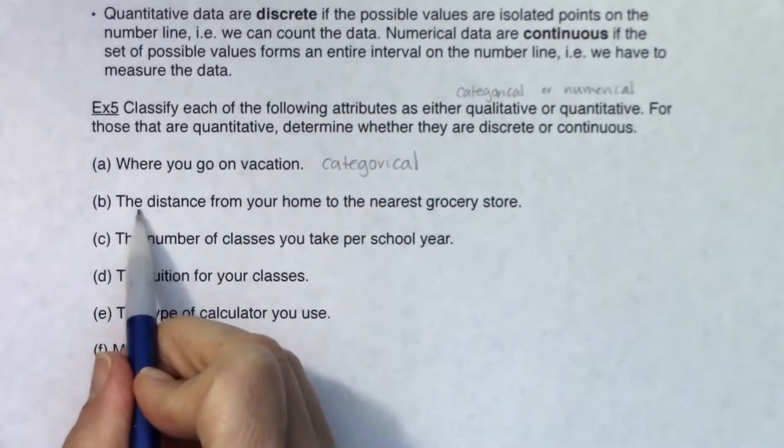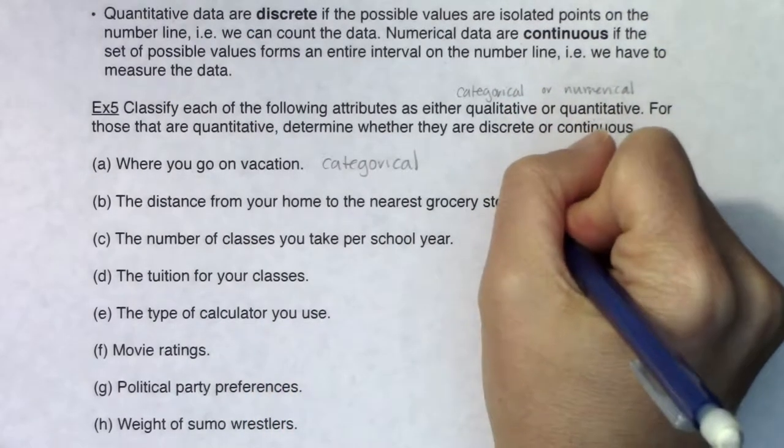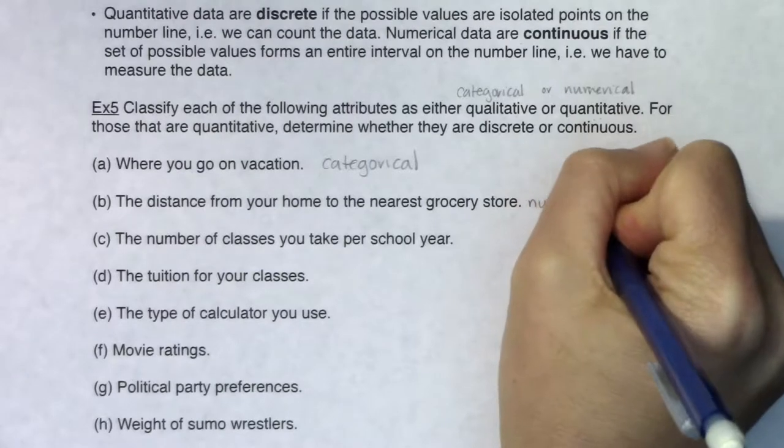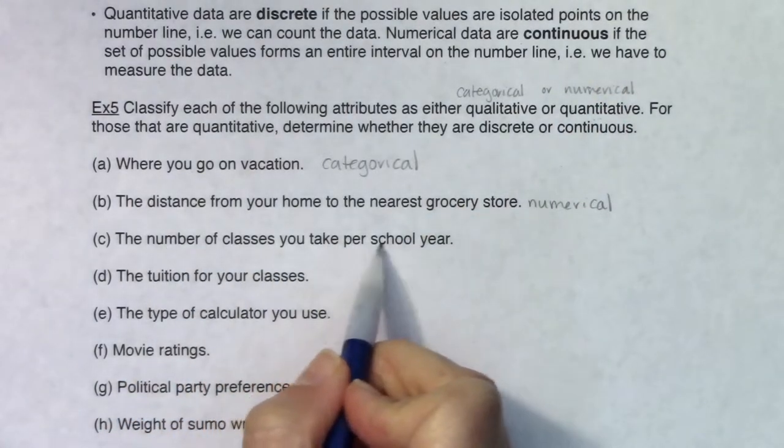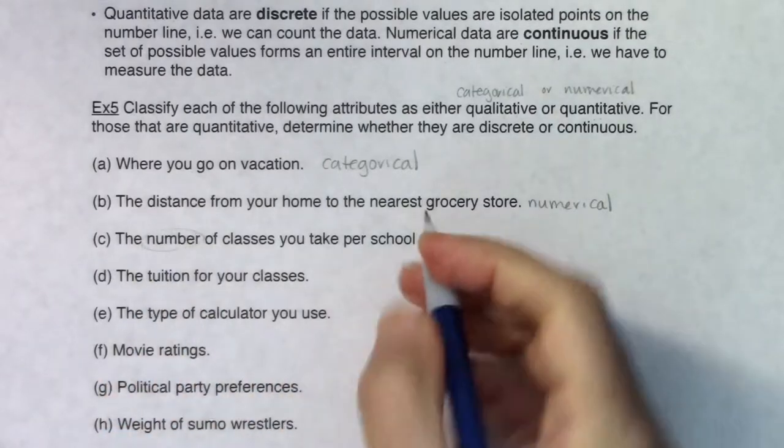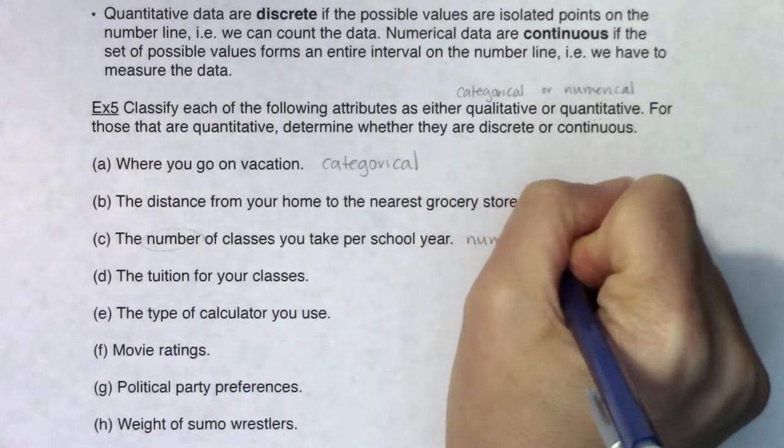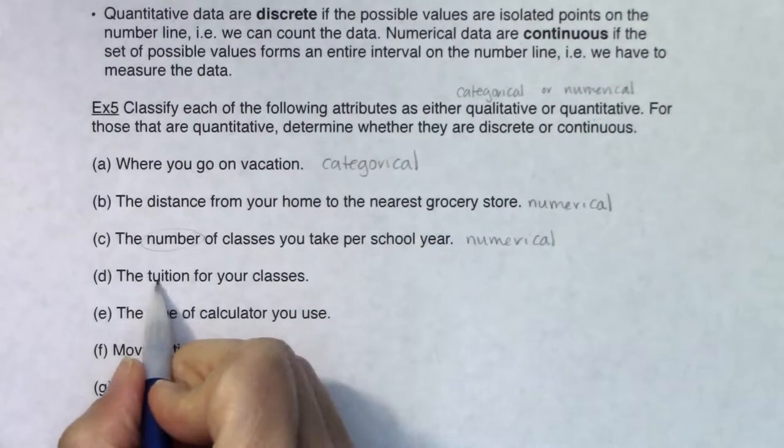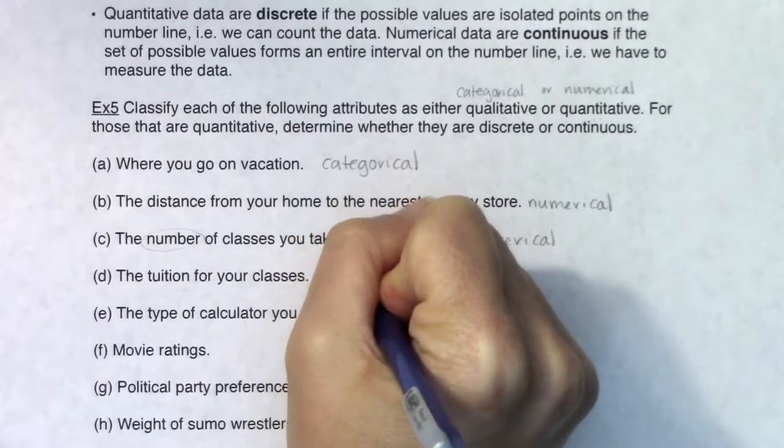The distance from your home to the nearest grocery store, I would answer that with a number so this is numerical. The number of classes you take per school year - I can see it right there, number - so this is numerical. Tuition for my classes, it's going to be a dollar amount so that's also numerical.